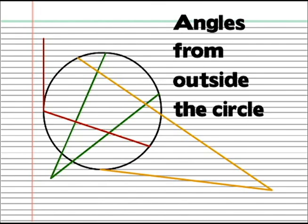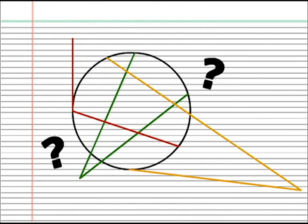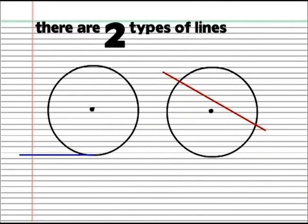Let's talk about angles from outside the circle. Okay, it might seem confusing, but let me explain. There are two types of lines that you need to know.